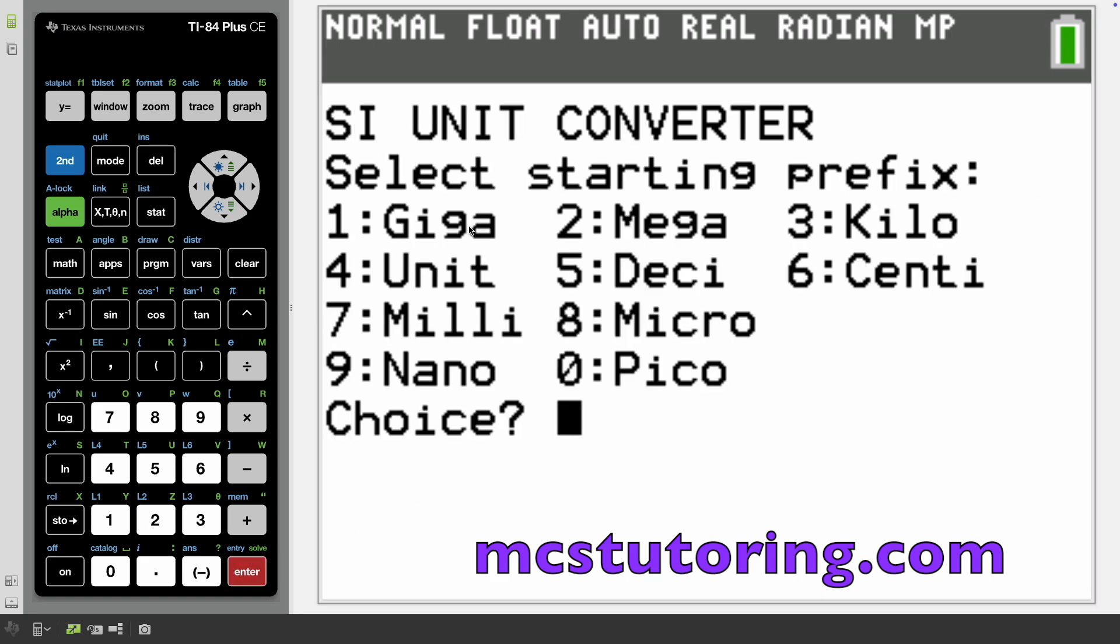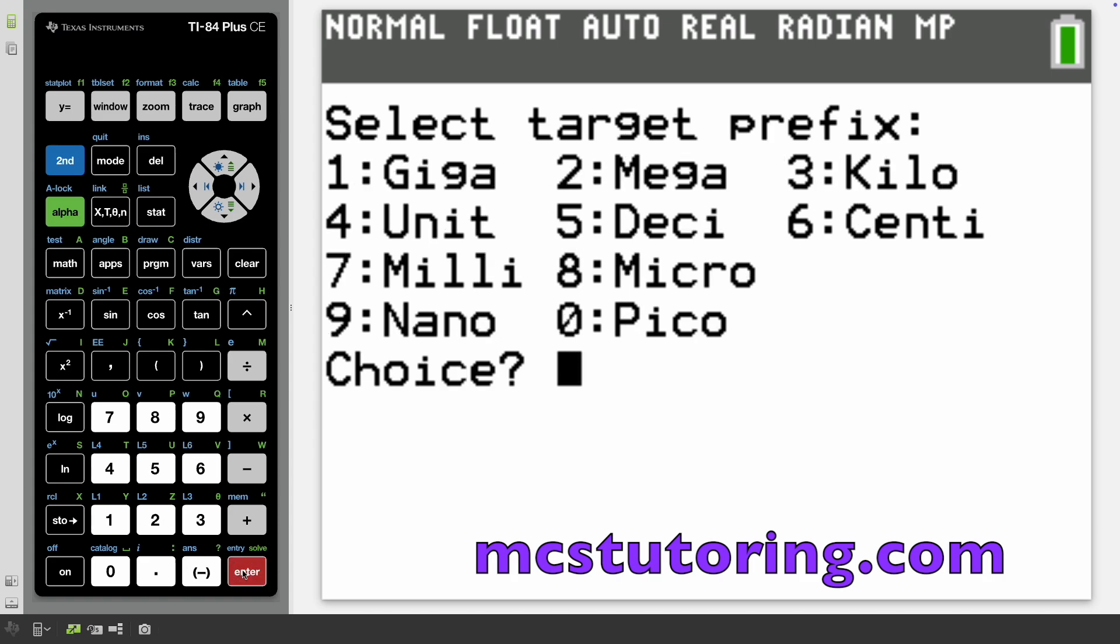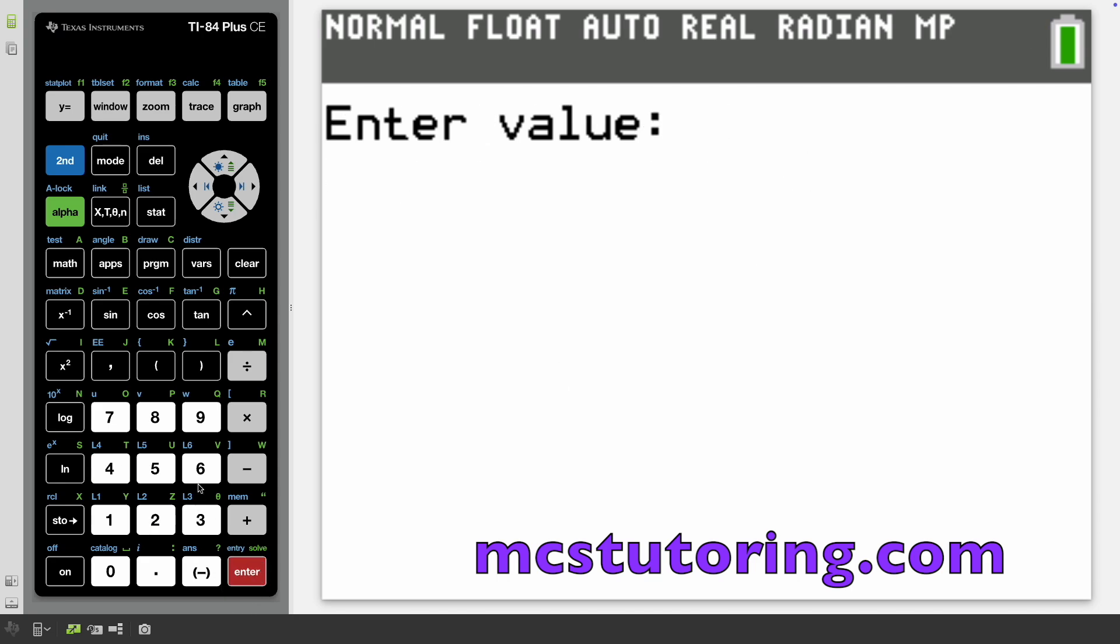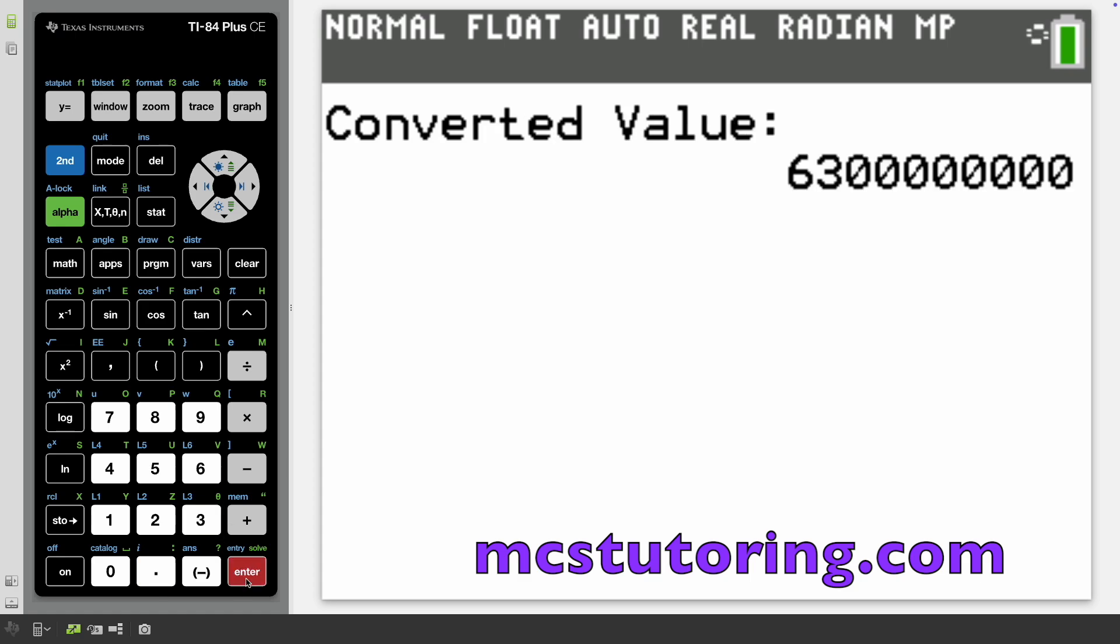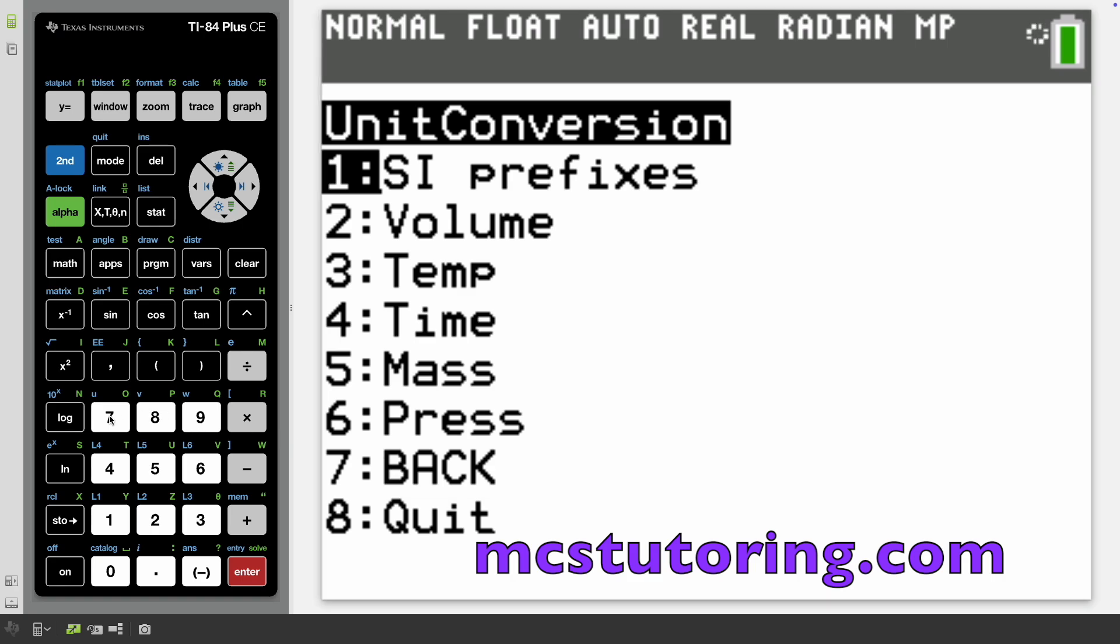You select your starting prefix. I don't have all of them, but I've got the usual suspects: giga, mega, kilo, unit, deci, centi, milli, micro, nano, pico. Let's go giga here. Let's say the target is the unit because typically you're going back to units. The value is 6.3. So 6.3 giga whatevers, that'd be a whole lot of units. You count the zeros. I'm old, I don't want to spend my time doing that.